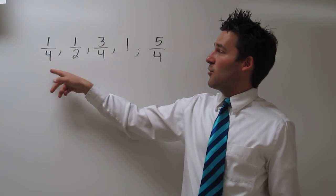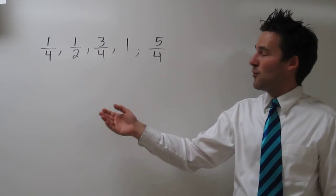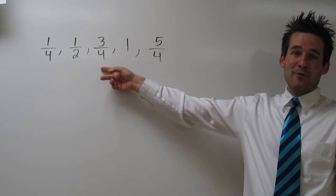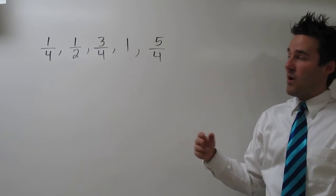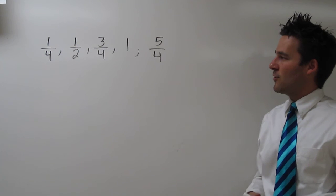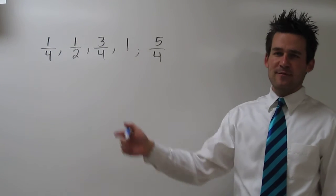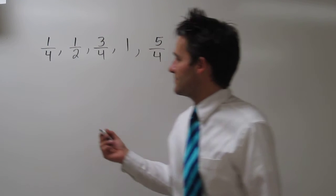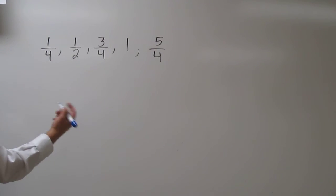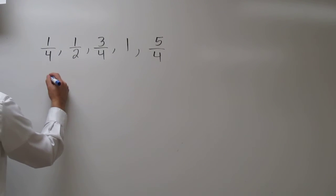To get from 1 quarter to 1 half, we add a quarter. Add another quarter to 3 quarters. Then we get all the way to 1, and then 5 quarters, or 5 fourths. It might be easier if we represent all of these with the same denominator. Let's rewrite these with a 4 in the denominator.